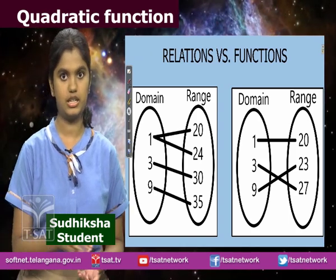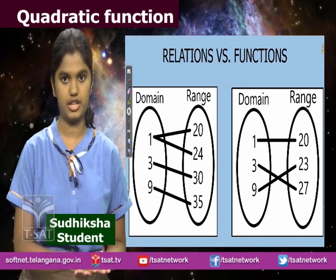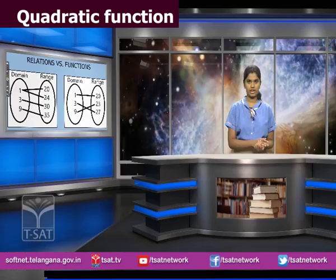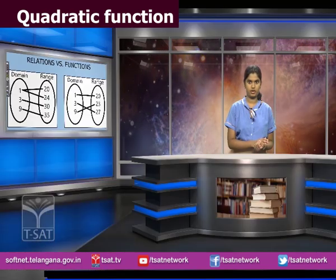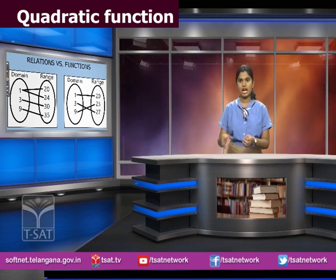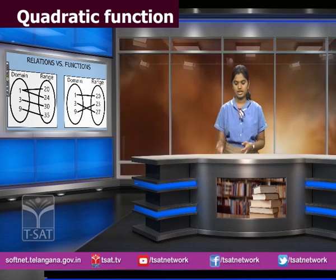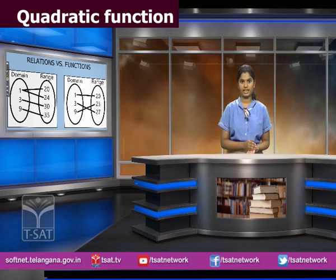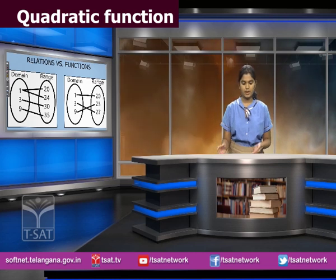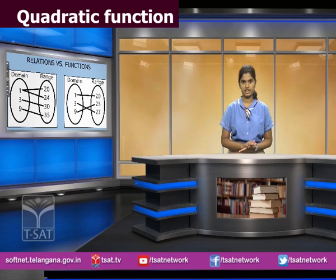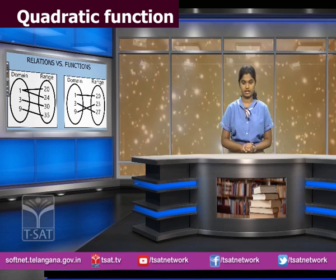The first image depicts a relation, and the second depicts a function. In a relation, one value of the independent variable can have more than one value in the dependent variable. However, in the case of a function, every single value of the independent variable will only have one value in the range. Hence, every function is a relation, but every relation cannot be a function.